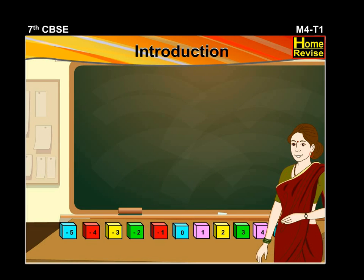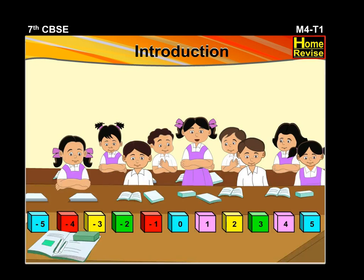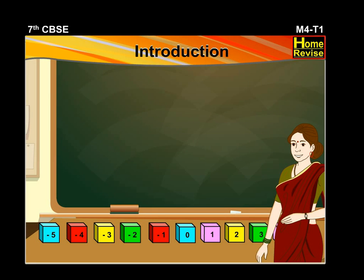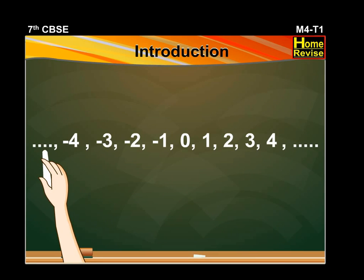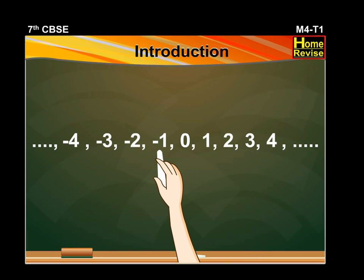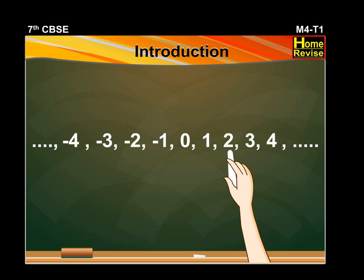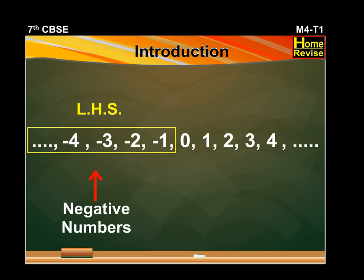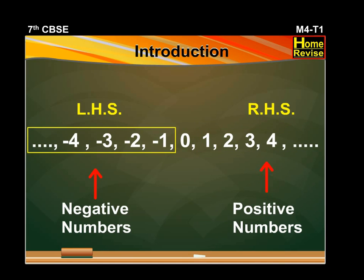Let us now add negative number blocks to the left hand side of the zero numbered block. Madam, which are these numbers? Students, these are integers. These are infinite at both ends. Let us write these numbers on the blackboard: from negative infinity ... minus 4, minus 3, minus 2, minus 1, 0, 1, 2, 3, 4 and so on. This shows that negative numbers lie on the left hand side of zero and positive numbers lie on the right hand side of zero.